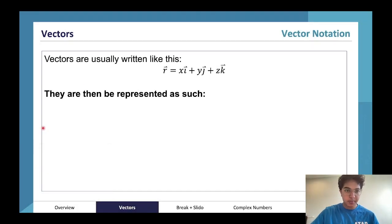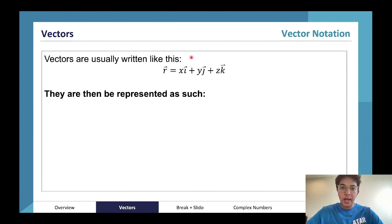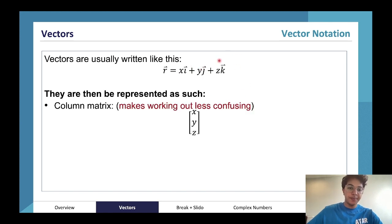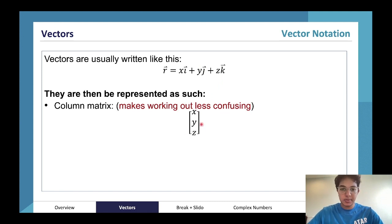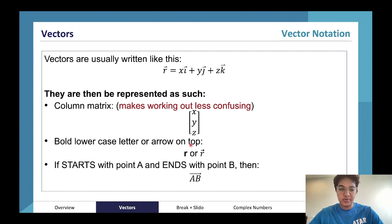Vectors are generally written out with their i component, j component, and k component. You can also represent them as column matrices or using a bold letter.